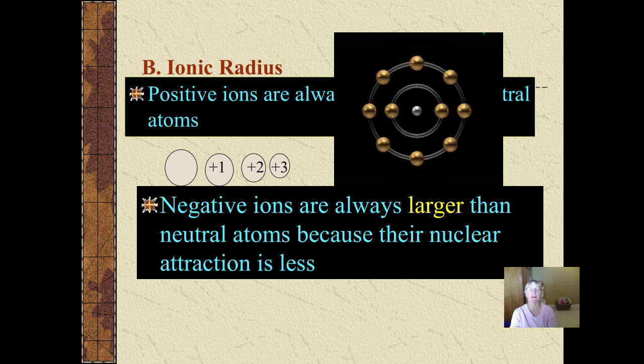Negative ions are always larger than their neutral atoms. And the reason for that is not necessarily because their nuclear attraction is less, but if you were to put some extra electrons into an outer energy level, there is greater electron-electron repulsion. Like charges repel, when electrons push each other away, they take up more space.